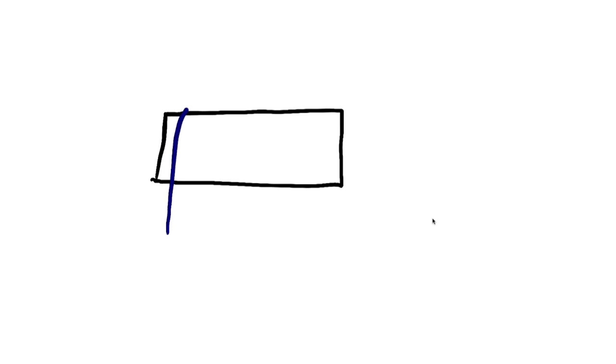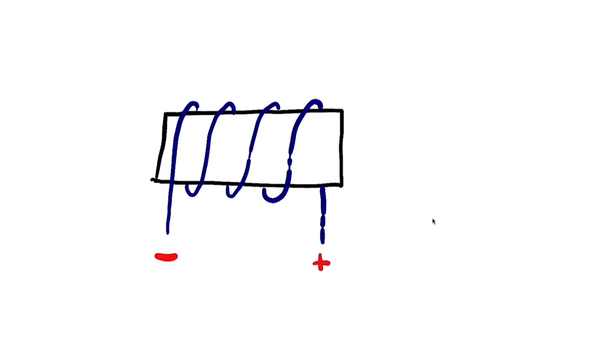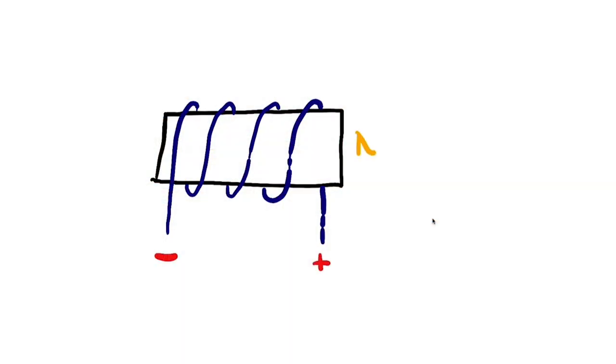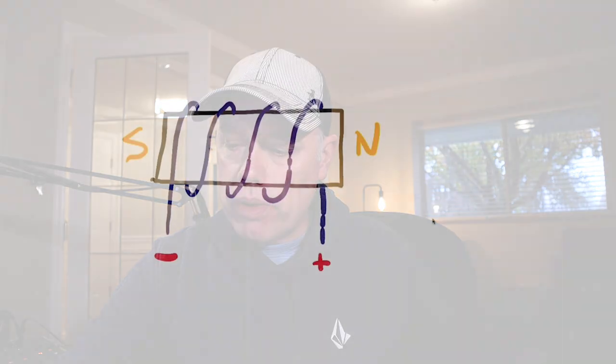In the whiteboard, I've drawn a core with a coil wrapped around it, and I've assigned polarities: this end is negative and this end is positive. The negative is always your reference. When the negative goes over the top of the coil, that means I see the back of my hand — my hand is wrapping over top. That tells me this end is north, because that's the way my thumb points, and this end is south.